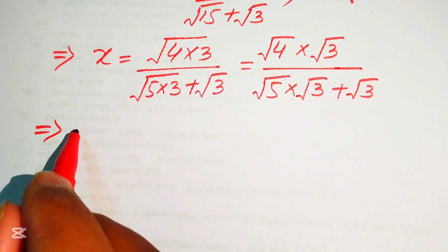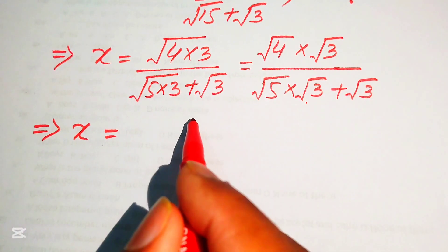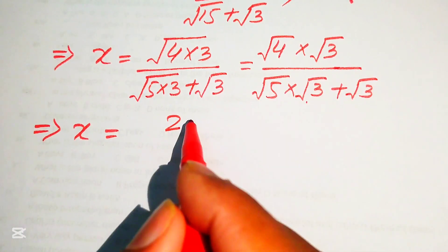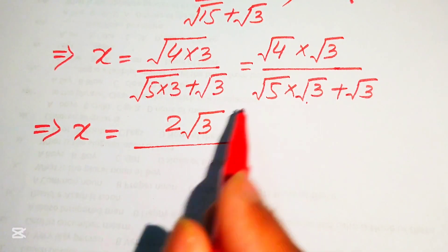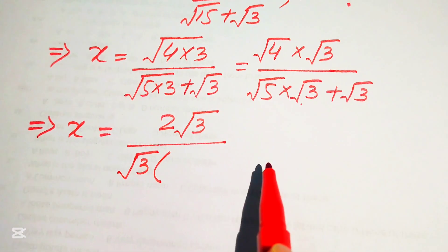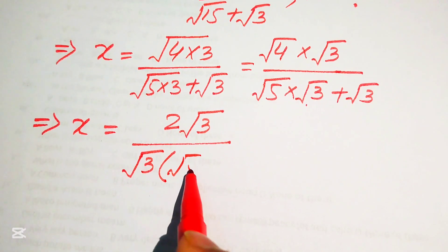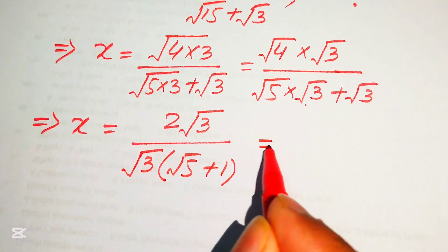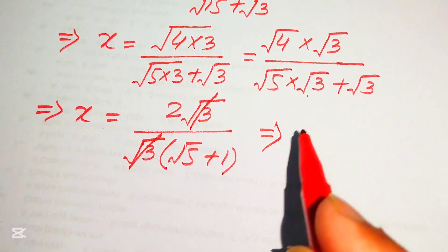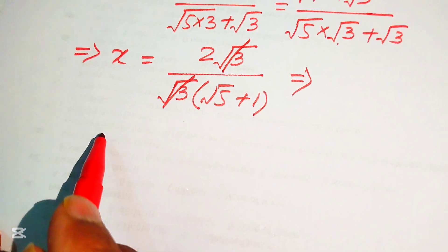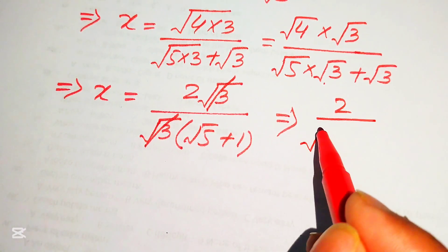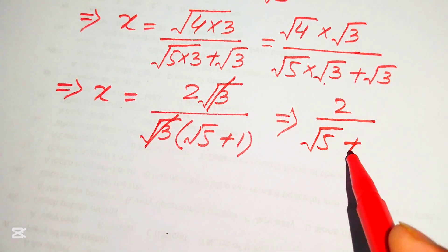In the denominator, we factor out √3. The numerator √4 = 2, so we get 2√3 divided by √3(√5 + 1). The √3 cancels, giving us x = 2 / (√5 + 1).